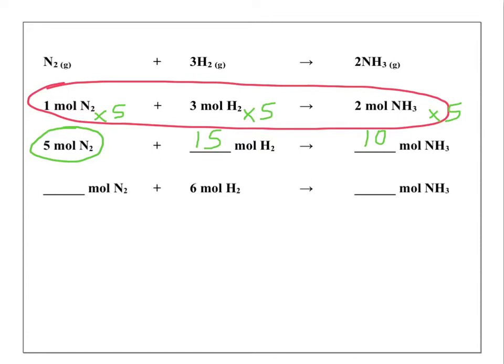In the next example, we have six moles of hydrogen instead of three in the balanced chemical equation. Three times two is six. So let's do the same thing for nitrogen and ammonia. For nitrogen, one times two is two. And for ammonia, two times two is four. So if we had six moles of hydrogen instead of three, we would need two moles of nitrogen to react and four moles of ammonia would be produced. This is stoichiometry — relating quantities, moles of reactants and products, to one another using the coefficients in the balanced chemical equation.